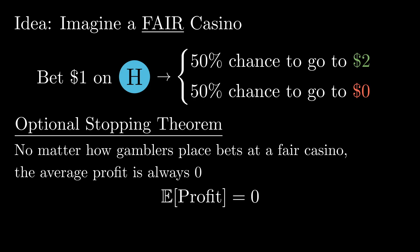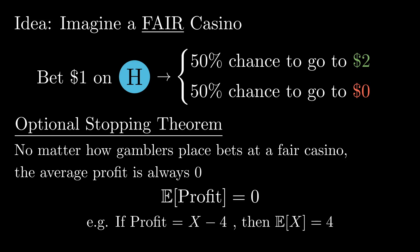You can think of the optional stopping theorem a bit like the law of conservation of energy — just as conservation of energy prohibits a perpetual motion machine, the optional stopping theorem prohibits a profitable betting strategy at a fair casino. Both are a no-free-lunch result. If you arrange a clever sequence of bets at a fair casino so that the profit equals X minus 4, then you can conclude that the expected value of X must be 4. As with any theorem, terms and conditions apply — the St. Petersburg paradox and the Martingale betting system are two famous examples where infinities cause problems — but for our problem the theorem does apply.